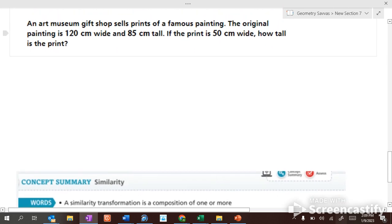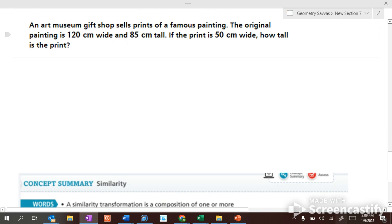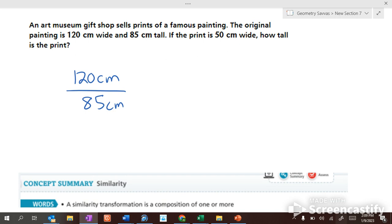An art museum gift shop is selling prints of a famous painting. The original painting was 120 centimeters by 85 centimeters. If the print is 50 centimeters wide, how tall is the print? So we need to work with proportions. 120 centimeters wide, 85 centimeters tall. So wide over tall. Since wide is here, wide is on the top, we put 50 centimeters wide over x centimeters tall. We cross multiply.